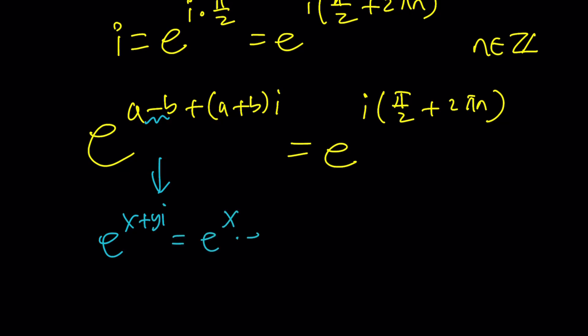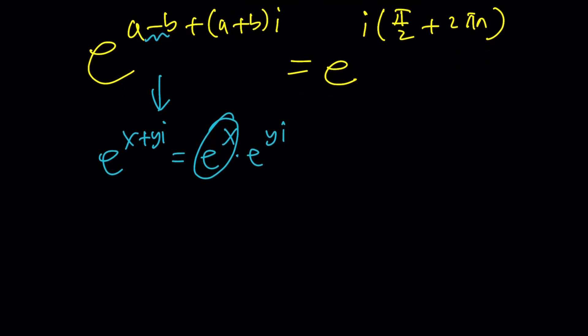Whenever you have e to the x plus yi you can write it as e to the x times e to the yi and this is going to be the modulus in this case the modulus is e to the a minus b because this can be written as e to the power i times a plus b and when you set this equal to that, this must be zero.